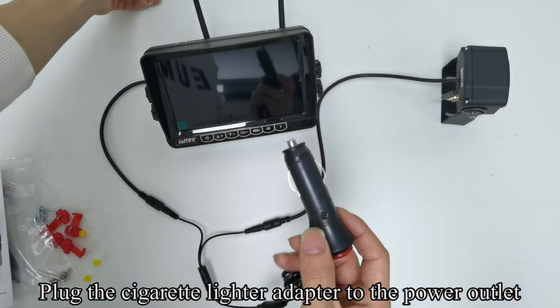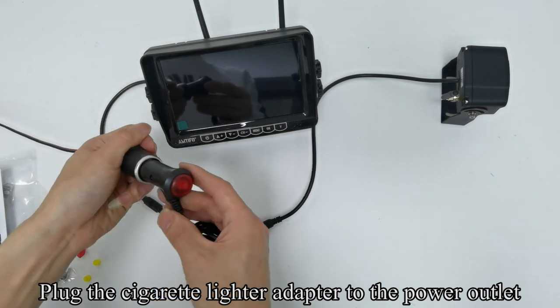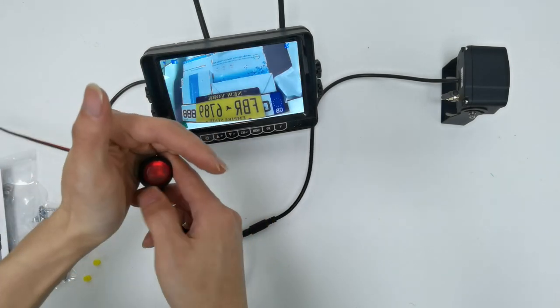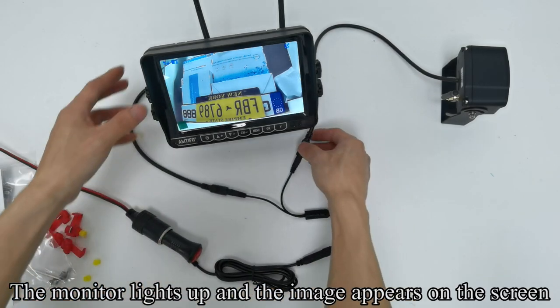Plug the cigarette lighter adapter to the power outlet. Press the red button. The red button lights up. The monitor lights up and the image appears on the screen.